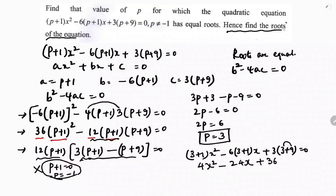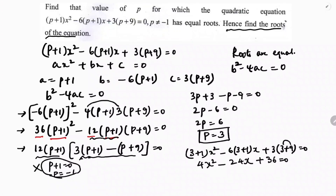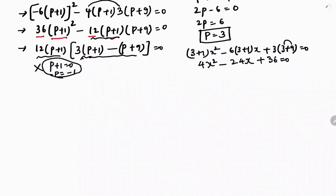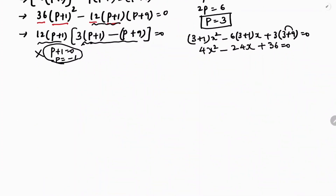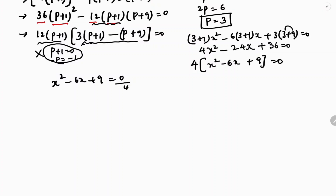Now factorize by taking 4 common: x² - 6x + 9 = 0 (since 4×9 = 36, dividing through by 4). So 0÷4 = 0, giving x² - 6x + 9 = 0.